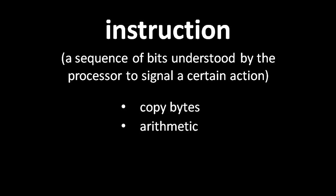Secondly, we need some instructions for doing basic arithmetic. For example, an instruction that takes these bytes of memory and these other bytes of memory, treats them both as representing numbers, and adds them together and stores the result at a specified location. Thirdly, any CPU should be able to do what's called bit logic. A NOT instruction, for instance, takes an input byte and simply flips all the bits. Additional logic operations include AND, OR, and exclusive OR — used when you want to manipulate the individual bits of bytes.